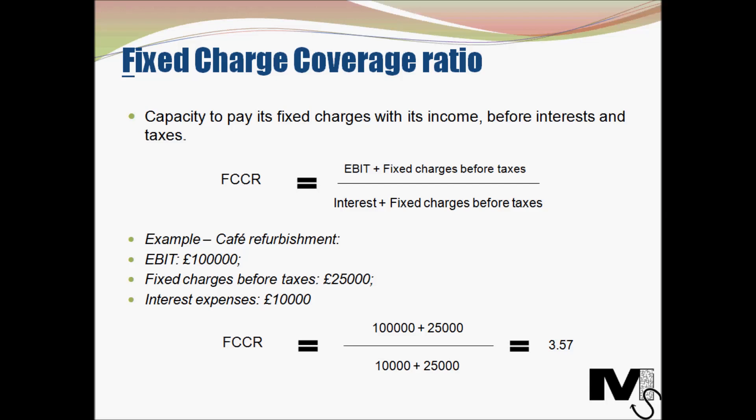So the café's income is about 3.5 times its interest and lease payments, meaning a loan could be sanctioned. Finance companies can actually look at these ratios to understand whether it's worth providing a loan to an organization.